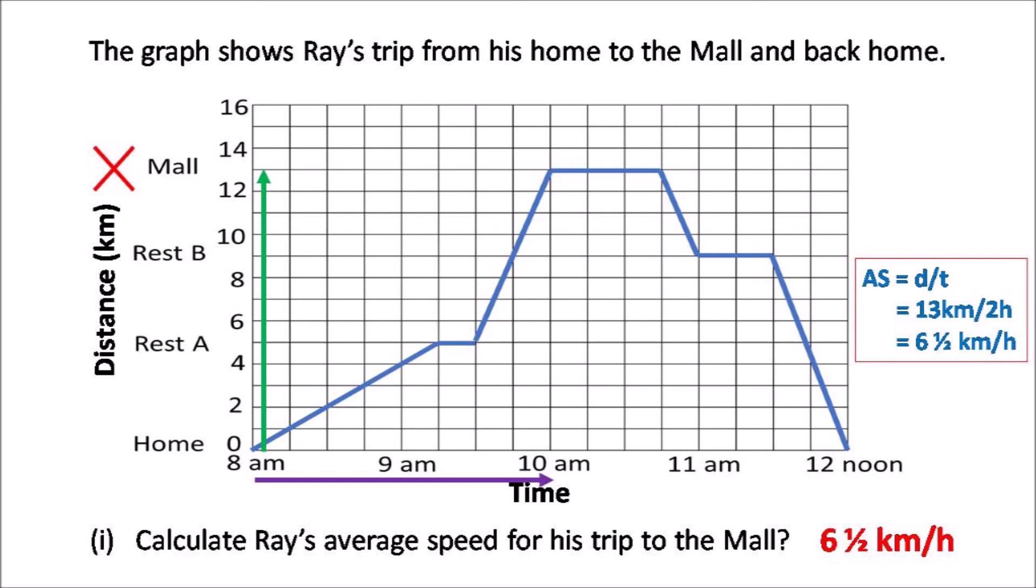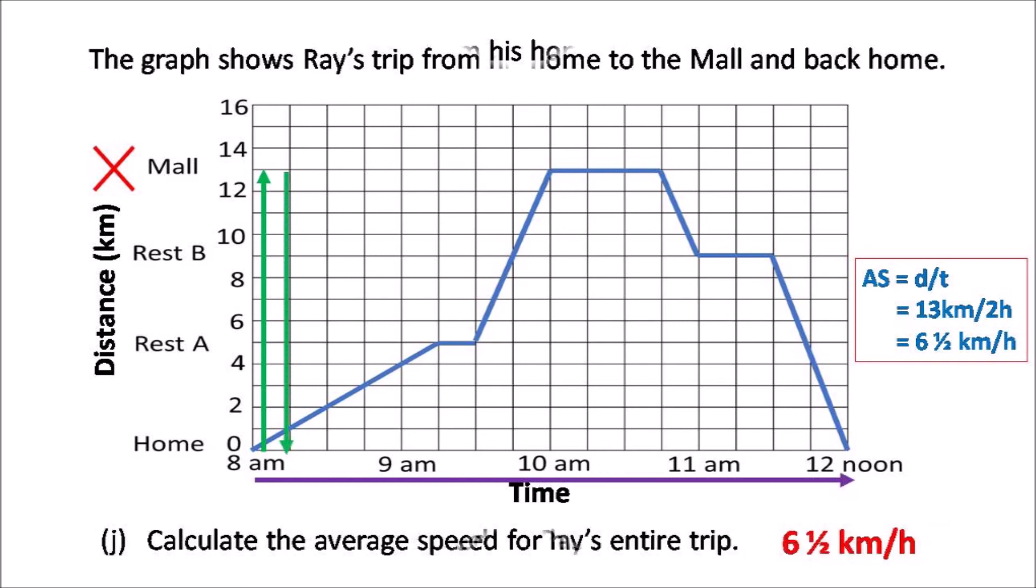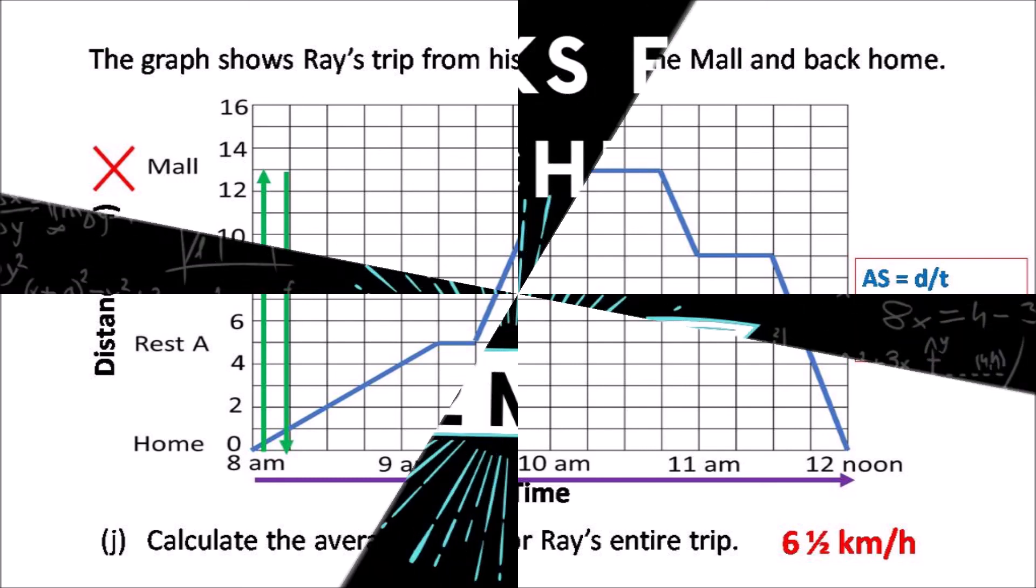And calculate Ray's average speed is distance divided by time, so it's 13 divided by 2, at 6.5 km per hour. And for the entire trip, the trip was 26 kilometers, and it was 4 hours. 26 divided by 4, 6.5 kilometers.